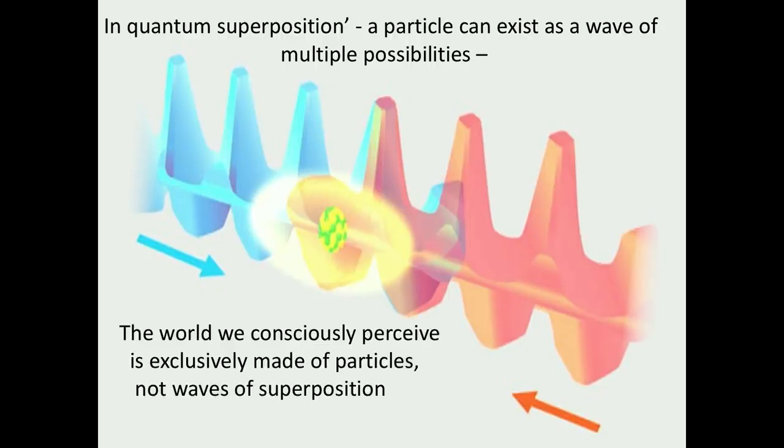The world we consciously perceive is exclusively made of particles, not waves of superposition. We tend to see things as definite and in one particular place. Except on psychedelics, by the way, where things can be wave-like, I'm told. And not necessarily always in one place. But I think, actually, that's a clue to consciousness and how psychedelics work and the boundary, the border between the quantum and the classical.